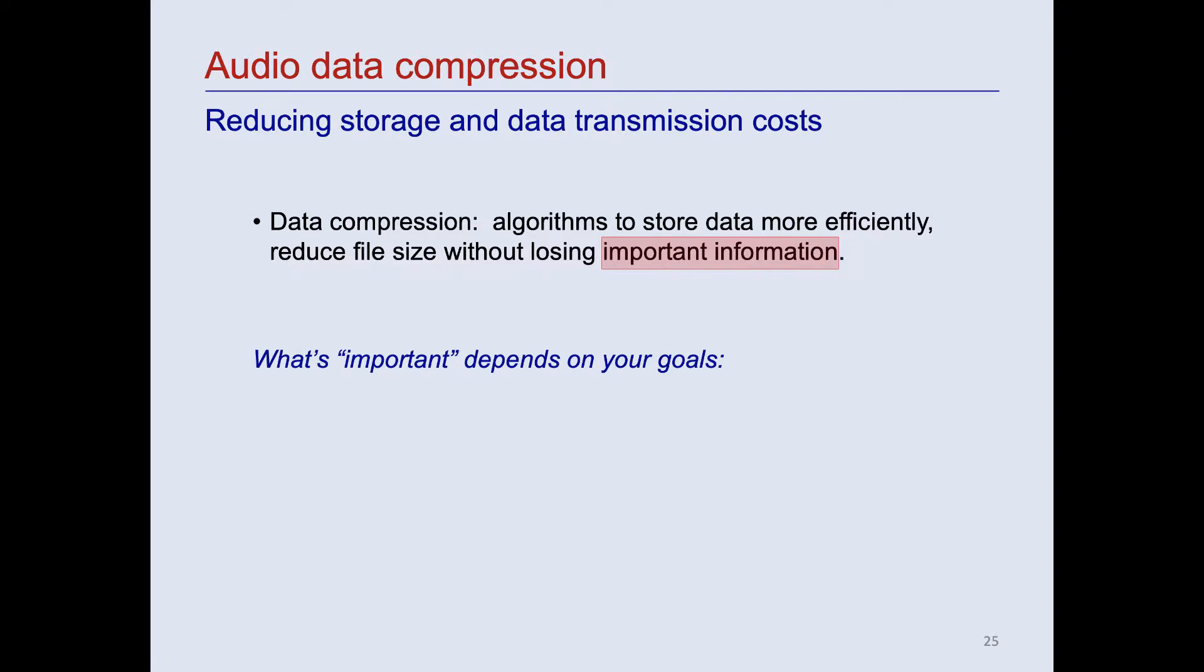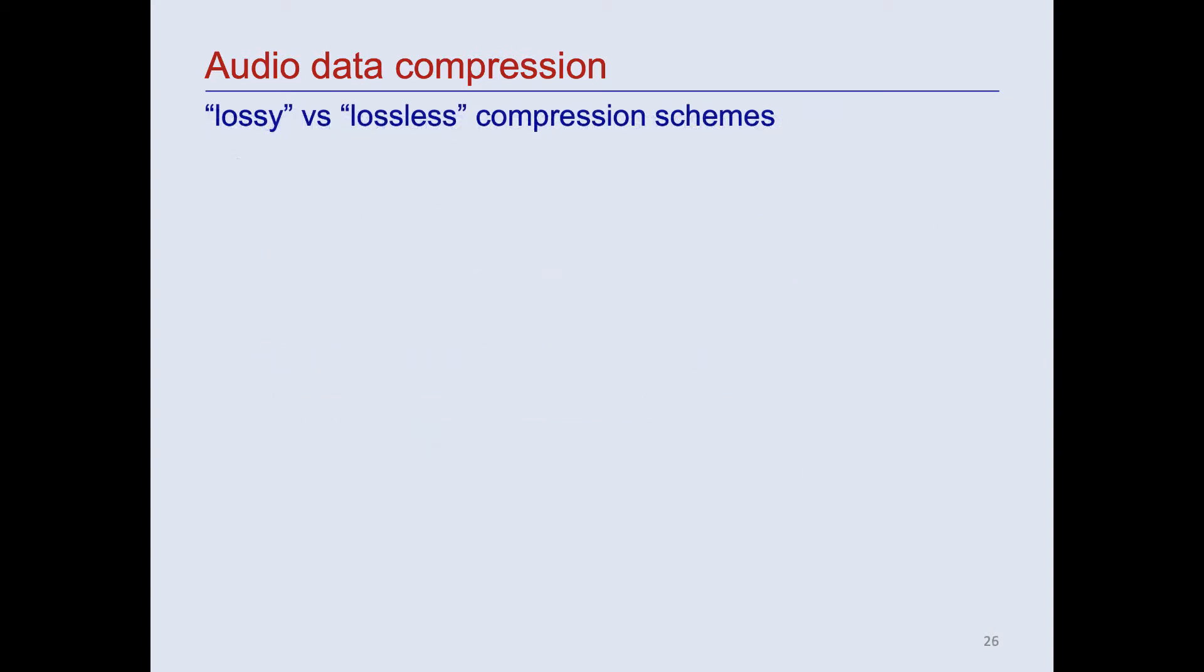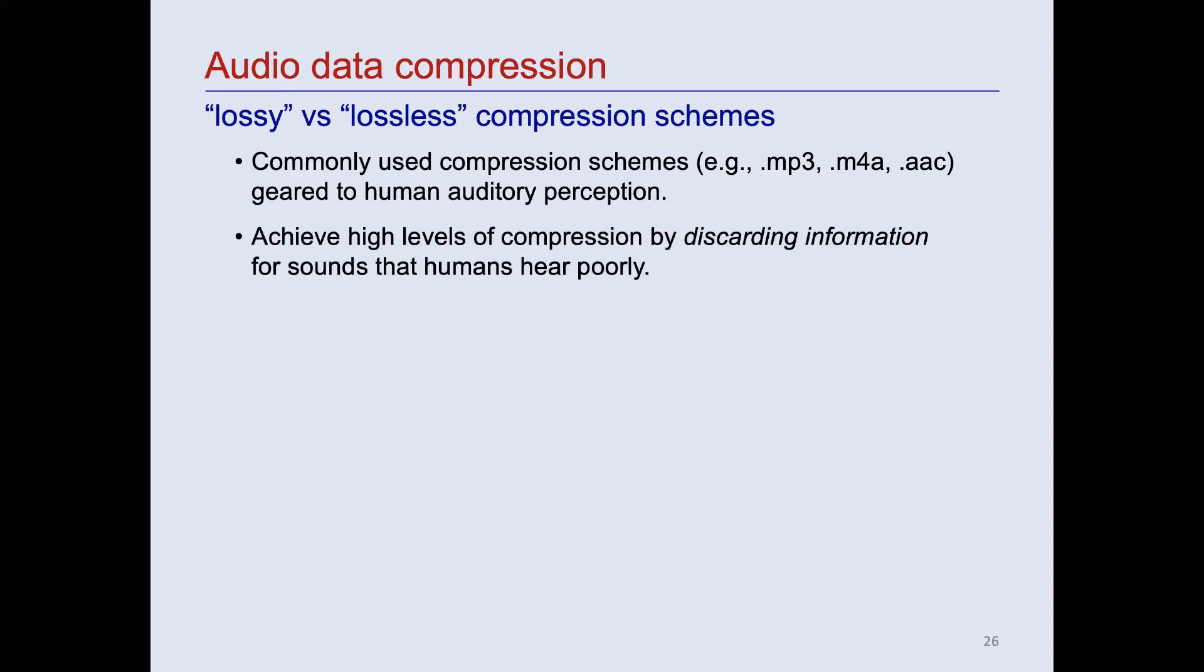If the goal is just to be able to have a recording, say of music or speech, that sounds good when played back to a human listener, then you only need to be concerned with sounds that humans hear well. However, if your goal is to make scientific measurements of sounds, then potentially anything and everything in a recording might be important. The most commonly used audio compression algorithms that are widely used for music and speech, like MP3, M4A, and AAC, are geared to human auditory perception.